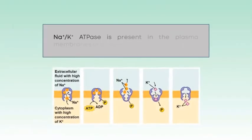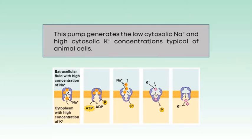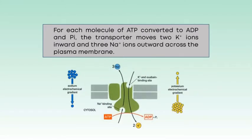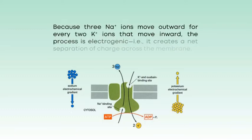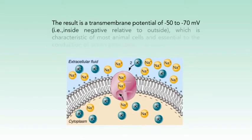The sodium-potassium ATPase is present in the plasma membranes of all eukaryotic cells. This pump generates the low cytosolic sodium and high cytosolic potassium concentrations typical of animal cells. For each molecule of ATP converted to ADP and inorganic phosphate, the transporter moves two potassium ions inward and three sodium ions outward across the plasma membrane. Because three sodium ions move outward for every two potassium ions that move inward, the process is electrogenic — that is, it creates a net separation of charge across the membrane. The result is a transmembrane potential of about minus 50 to minus 70 millivolts, inside negative relative to outside, which is characteristic of most animal cells and essential to the conduction of action potentials in neurons.